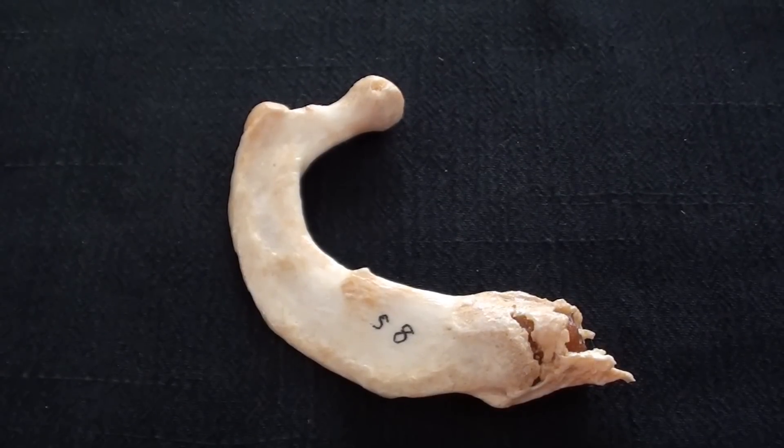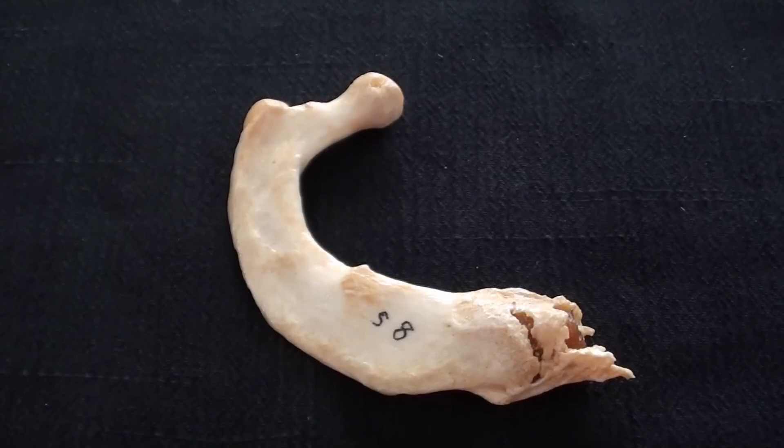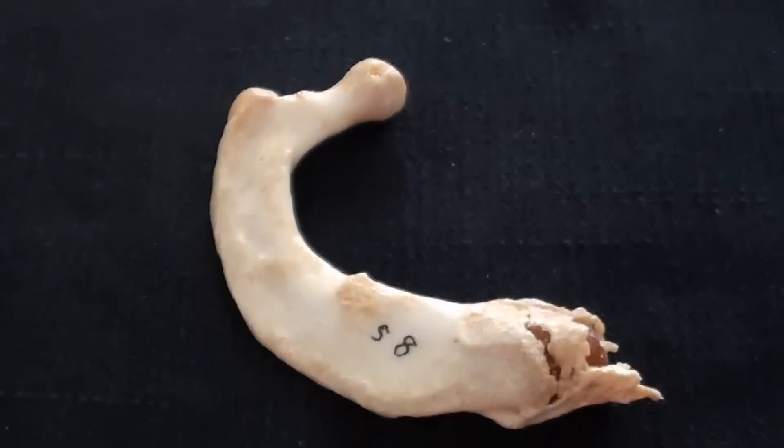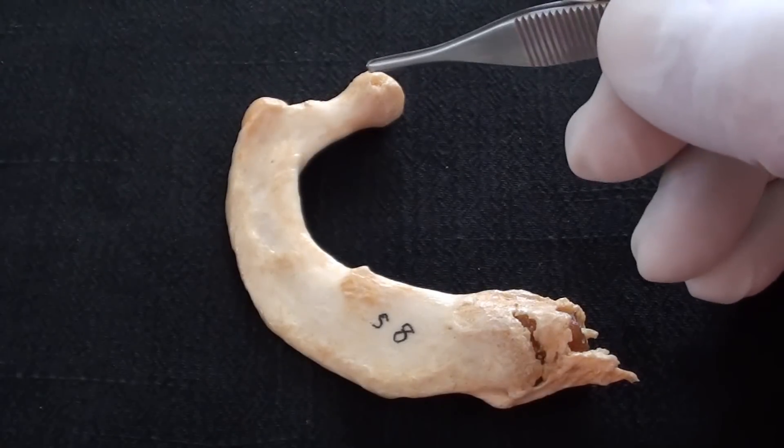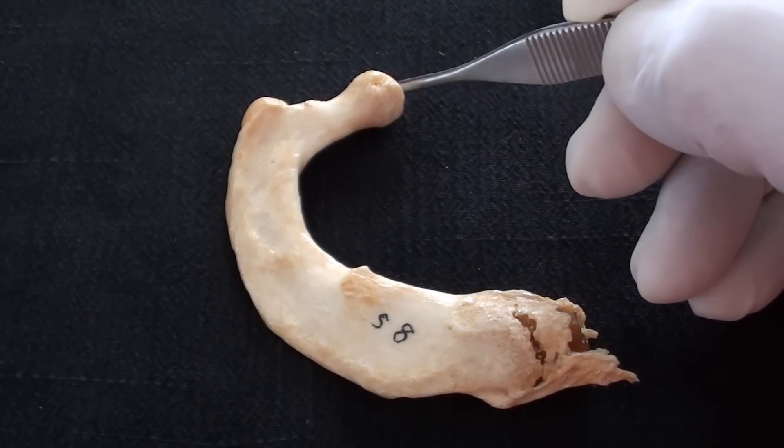This is rib number one which is considered to be atypical. So let's find out what are atypical features of this rib. It certainly has the head, but this time the head has only a single facet.